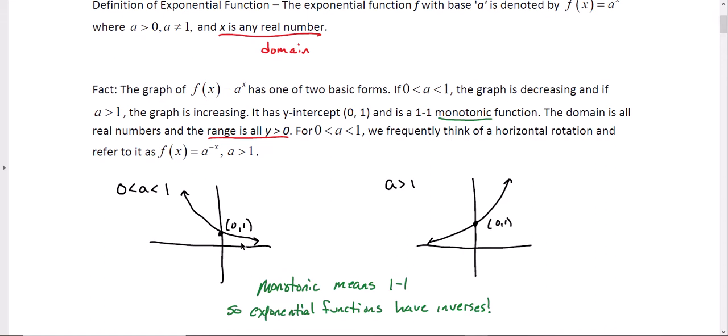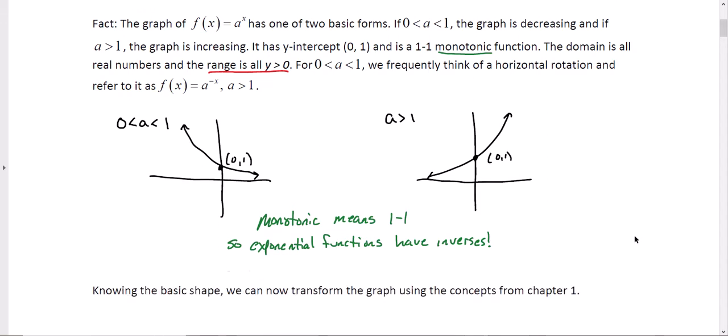For the graph on the left, we frequently think of a horizontal rotation and refer to it - let's call that a reflection instead of a rotation. I don't know why I wrote rotation there. We think of it as a horizontal reflection of this original graph. So this is our basic exponential graph, and this is kind of an alternate version, but it can all stem from here, just using reflections, translations, and some of the shifts that we talked about earlier.